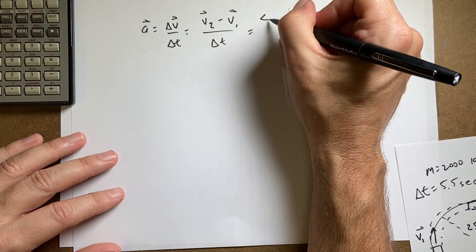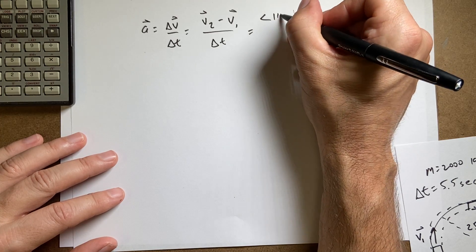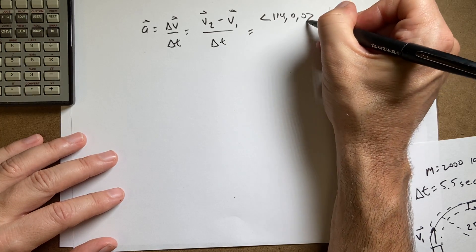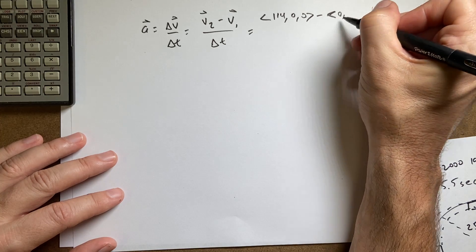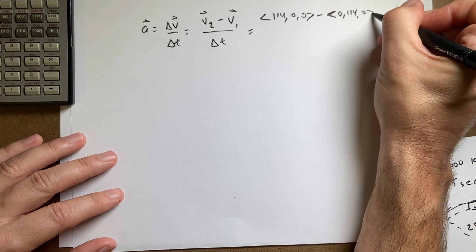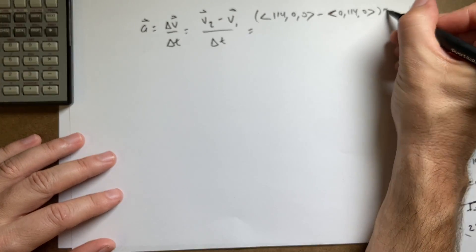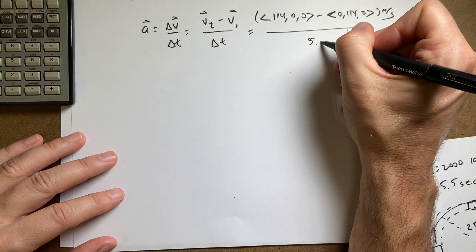V2 is 114, 0, 0, minus 0, 114, 0 meters per second. All of that divided by 5.5 seconds.